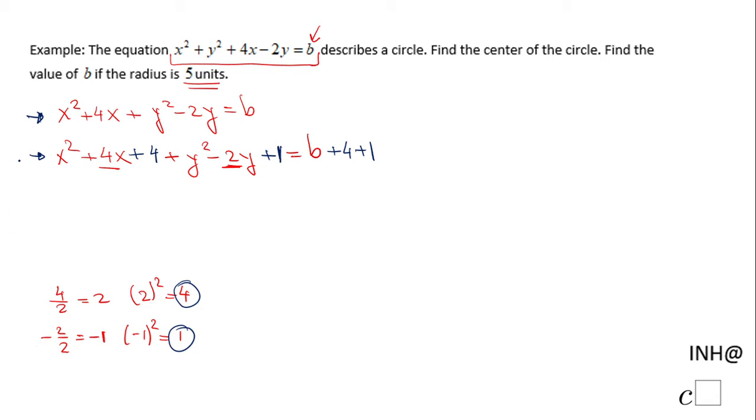And now this trinomial here is a perfect square. It's going to be (x + 2) squared - remember that 4 comes from this 2. Plus the second trinomial is (y - 1) squared - again, that negative 1 comes from here. And the right side becomes B plus 5.